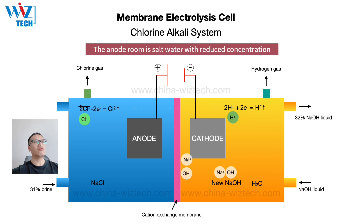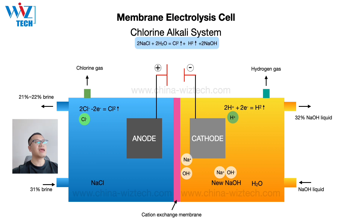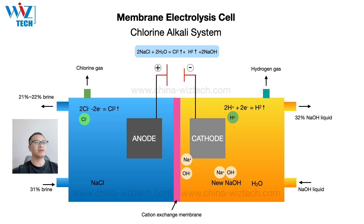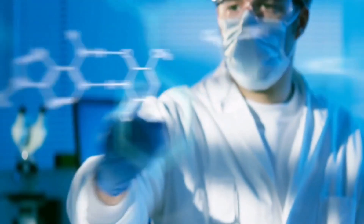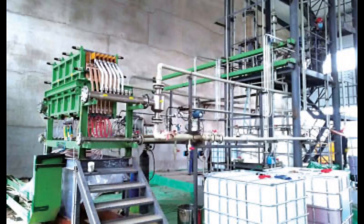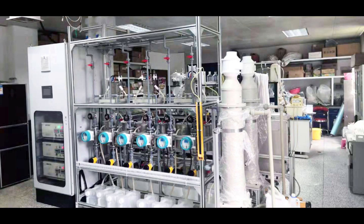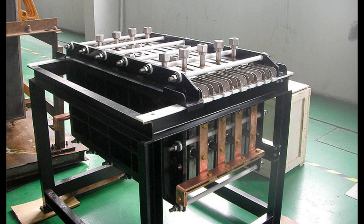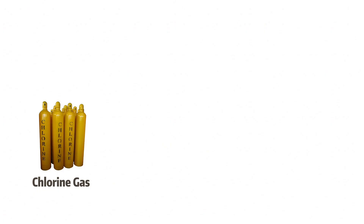The anode room outputs salt water with a reduced concentration. This is the electrochlorination process, also called the chlorine-alkali system. We are a leading manufacturer of electrochlorination systems in China, offering small and medium electrochlorination systems for producing chlorine gas or sodium hydroxide solution.